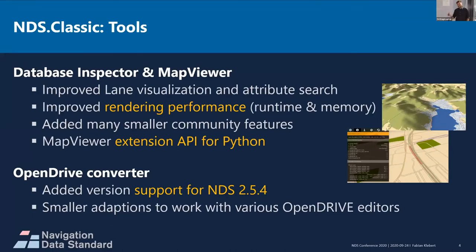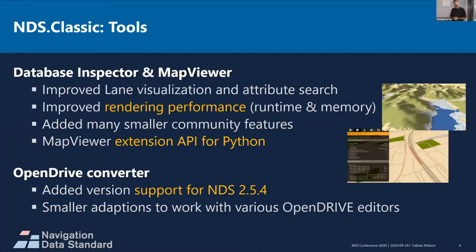We added a lot of smaller community features, especially listening to the NDS community — the developers that use it day in, day out — and implemented smaller features that they find helpful. We had a map viewer extension for C++, and now there's one for Python as well, since Python is increasingly the go-to language in the automotive world. We also updated the OpenDRIVE converter, which converts OpenDRIVE to NDS and NDS to OpenDRIVE.